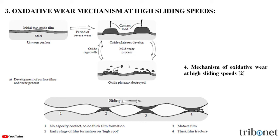Then, the thick oxide layers are established and the wear rate declines markedly. When each oxide layer reaches a critical thickness, it becomes too weak to withstand the load and frictional shear stress and is removed during sliding. An alternative mechanism of oxide layer removal is due to the fatigue process, which is initiated after a certain number of contacts with the opposing surface is reached.